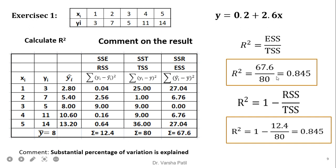Once the table is ready, it is very easy to calculate the R-square value. We are getting the value 0.845. And when the value of R-square is greater than 0.75, or 75%, it is always better. So our comment is: substantial percentage of variation is explained.